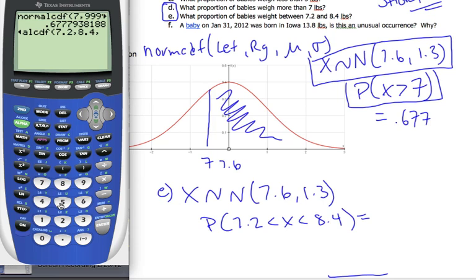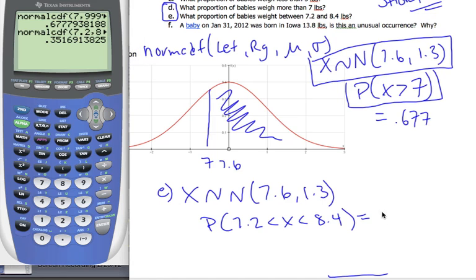Mean is 7.6, standard deviation 1.3, enter, and I get my value of 0.352.